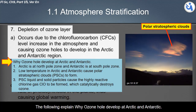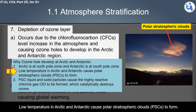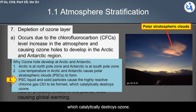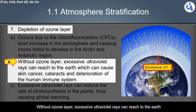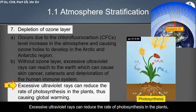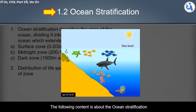Ozone holes refer to severe depletion of the ozone layer at the Arctic (North Pole) and Antarctic (South Pole) zones. Polar stratospheric clouds (PSC) form there, and their liquid and solid particles cause highly reactive chlorine gas to form, which catalytically destroys ozone. Without the ozone layer, excessive ultraviolet rays can reach Earth, causing skin cancer, cataracts, and deterioration of the human immune system, reducing photosynthesis rates in plants, and contributing to global warming.